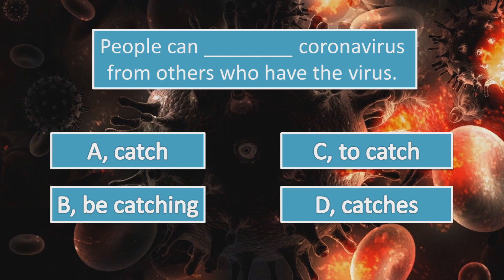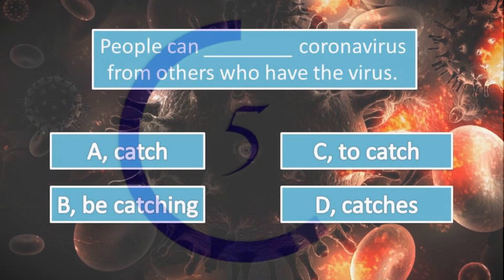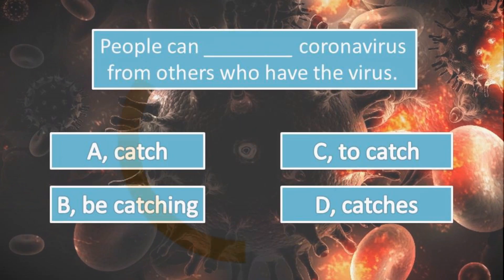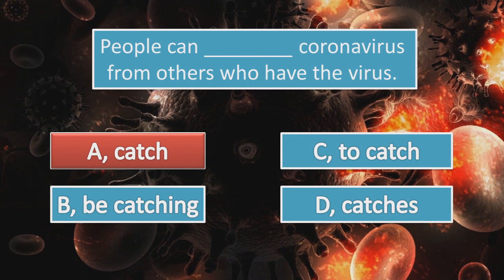People also can get infected if they touch an infected droplet on a surface and then touch their own nose, mouth or eyes. People can catch coronavirus from others who have the virus. Choose the correct answer. The correct answer is A: people can catch.